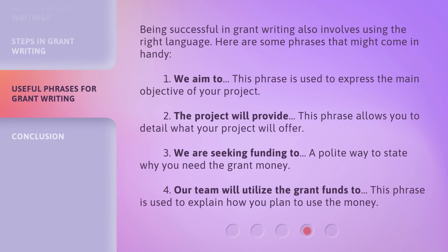Being successful in grant writing also involves using the right language. Here are some phrases that might come in handy. 1. "We aim to." This phrase is used to express the main objective of your project. 2. "The project will provide." This phrase allows you to detail what your project will offer. 3. "We are seeking funding to." A polite way to state why you need the grant money. 4. "Our team will utilize the grant funds to." This phrase is used to explain how you plan to use the money.